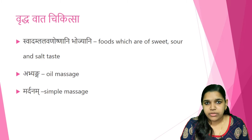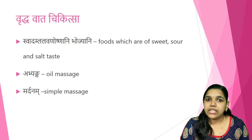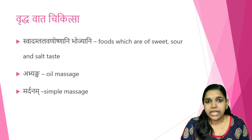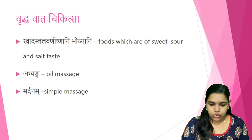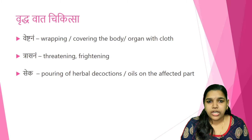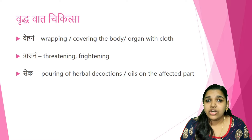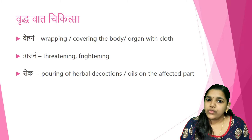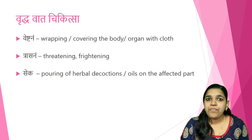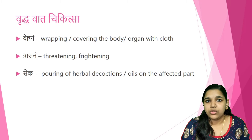Abhyanga — oil massage — is considered the best treatment for controlling Vata Dosha. Then Mardana, which is simple massage or applying pressure, also helps in controlling Vata Dosha. Veshtana means wrapping or covering the body part with cloth, such as bandaging. When different types of pain are present, bandaging helps in removing the pain and also provides the Upanaha Sveda effect, reducing Vata Dosha.